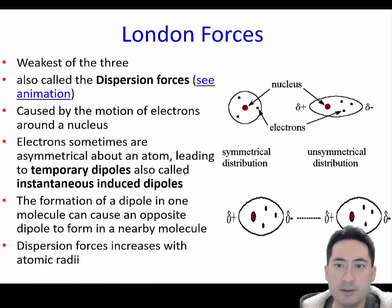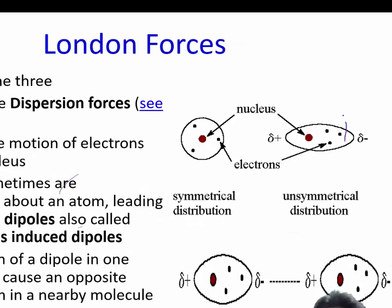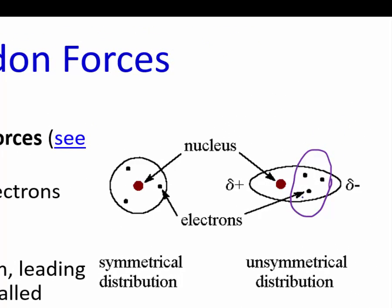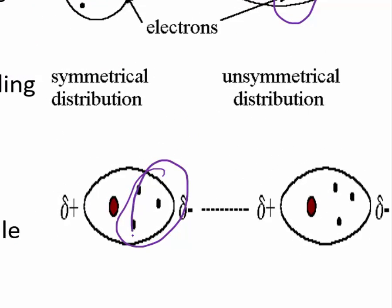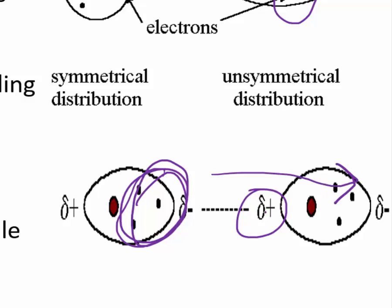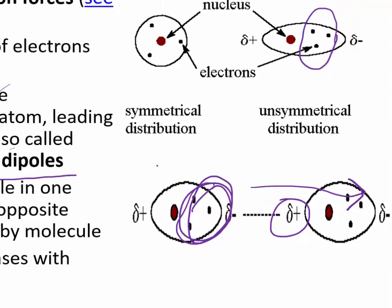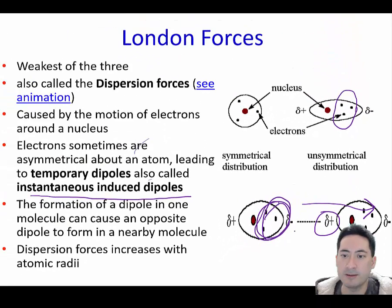Here we have a diagram showing you where the electrons are. At any point in time, the electrons could be unevenly placed on one side. If that happens and this becomes slightly negative, that will induce a positive charge here because it will repel electrons from the molecule next to it. It has this temporary positive-negative pole — it's an instantaneous induced temporary dipole. It's very weak and we draw a dotted line here to represent that.